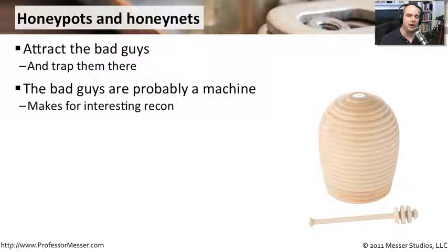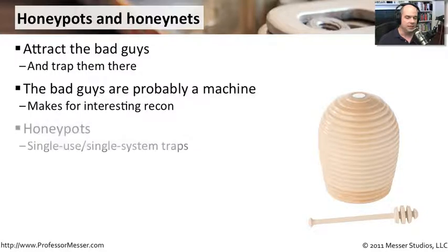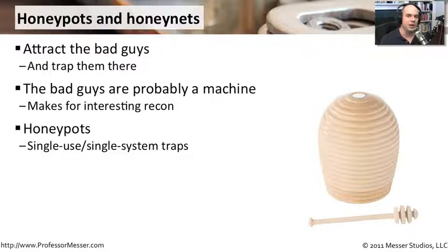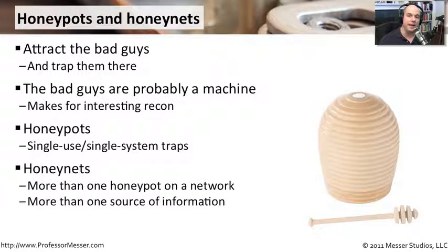In many cases the bad guys are automated processes — they're machines, not real people banging against our systems. So if we can collect all of that data, it makes for some very interesting reconnaissance. A honey pot is a single device, a single trap looking for very specific information, maybe only providing a single type of service or a limited number of services. If you want to make it more complex for the bad guys, you might set up a honey net, which is more than one of these honey pots.